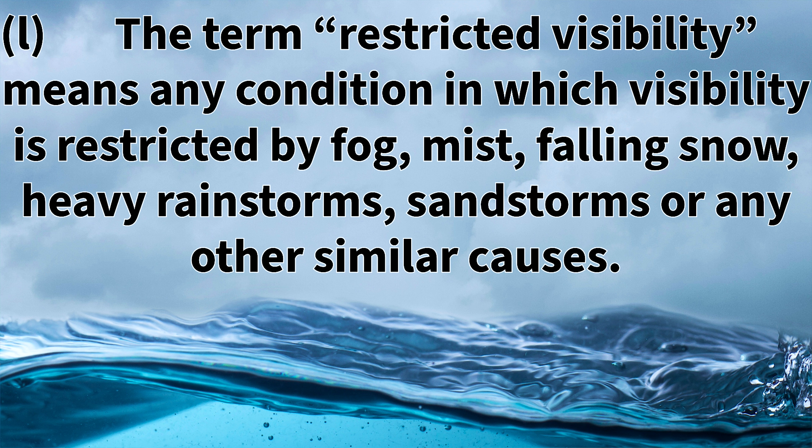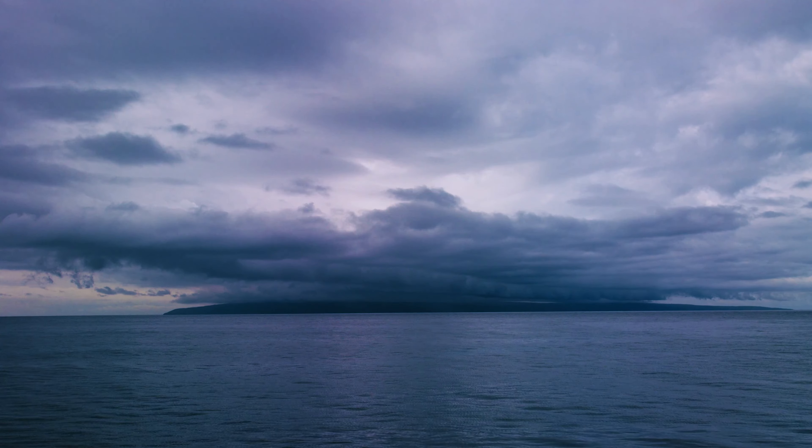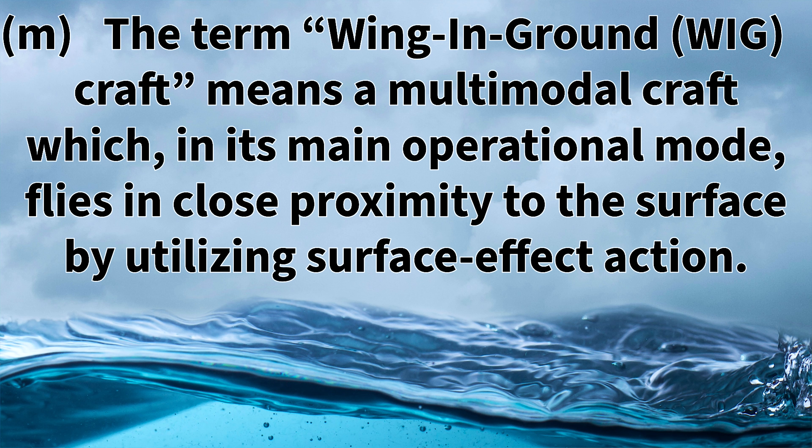Rule 3l states that the term 'restricted visibility' means any condition in which visibility is restricted by fog, mist, falling snow, heavy rainstorms, sandstorms, or any other similar causes. This is very important to know because there's an entire section dedicated to restricted visibility. You can have restricted visibility even during daylight hours — here in Florida we don't have strong fog like in the northeast, but we have severe rain and thunderstorms that can completely block visibility to zero. Being in a restricted visibility situation is extremely dangerous.